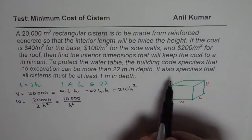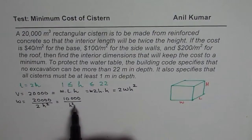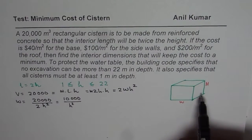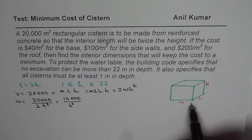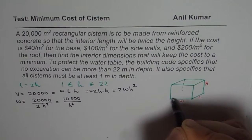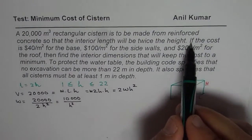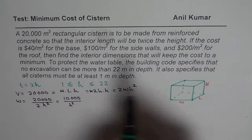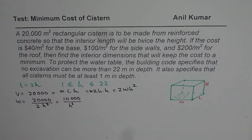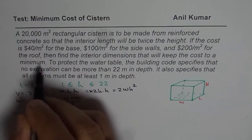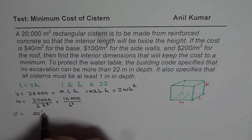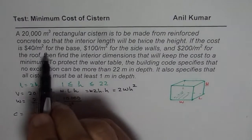Now we want to minimize the cost. For the cost, each surface has a different cost attached to it, so we are looking at the surface area of each face. The cost is 40 per meter square for the base. The base area is length times width. So we write cost equals 40 times length times width.